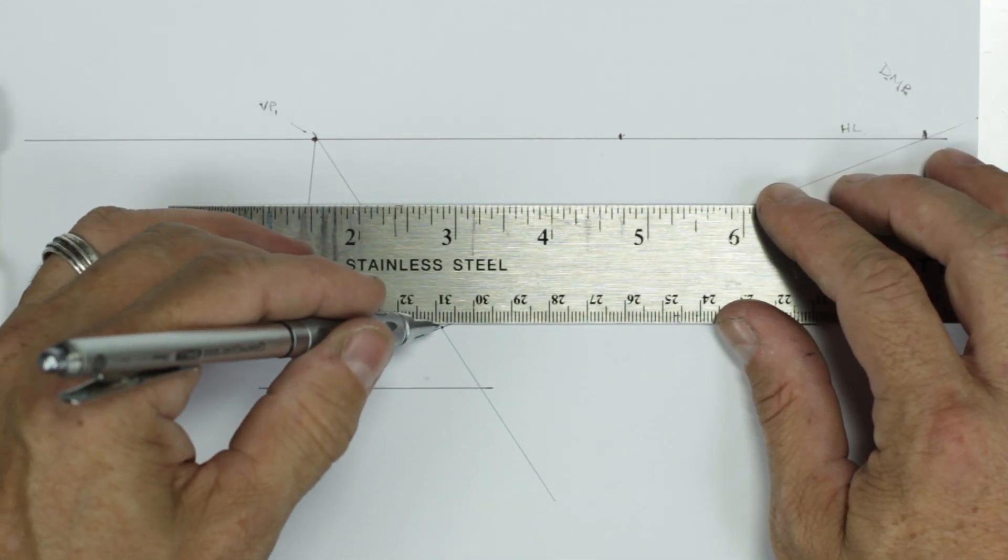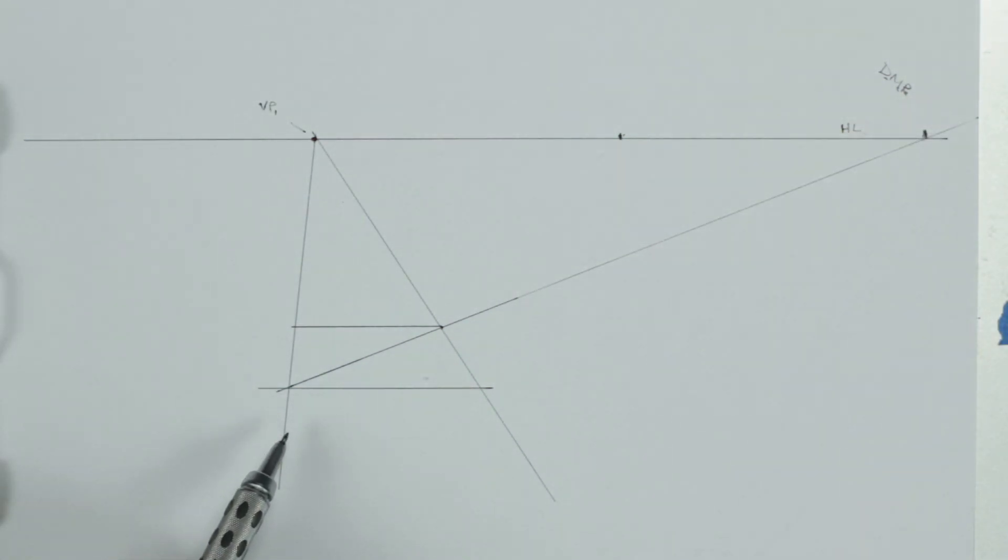So what we will have drawn is a perfect square in perspective as it's fading back into space.